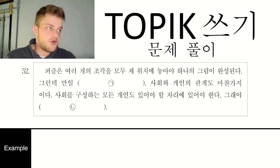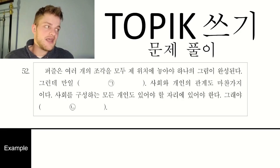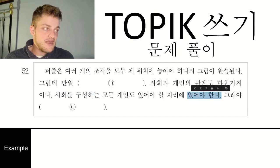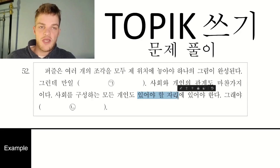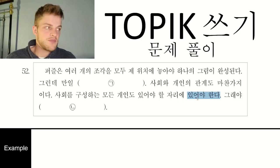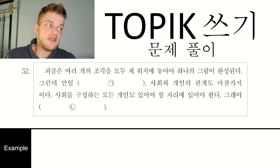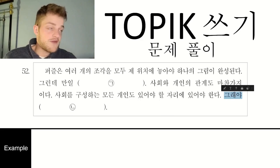Let's look at the rest of the sentence. We already saw it's now making a comparison to society and individuals — it was the same thing. So every individual that makes up society must be in its place, the place where it has to be. Just like puzzle pieces, every person that makes up society must be in the place where they have to be.